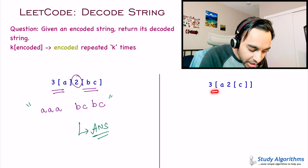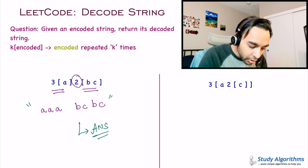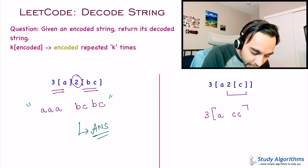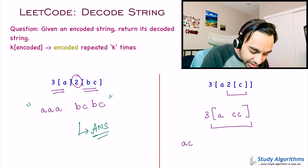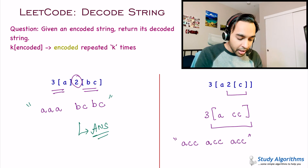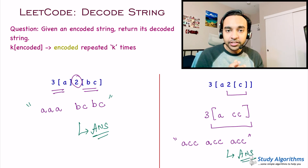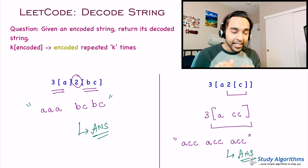In test case 2, you have an outside bracket and an inside bracket. We will first solve the inner bracket: I get 2[c], so I get 2 c's. Then I solve the outer bracket, repeating the inner string 3 times, giving a, c, c a total of 3 times. So for test case number 2, that string will ultimately be your answer. If you have understood the problem statement, feel free to try it on your own. Otherwise, let us dive into the solution.